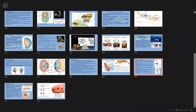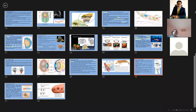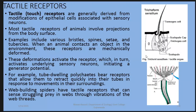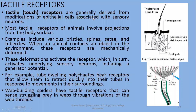The last type of receptor we are going to discuss is tactile receptors. Tactile receptors are touch receptors, and are generally derived from modifications of epithelial cells associated with sensory neurons. Most tactile receptors involve projections from the body surface. Examples include certain types of bristles, spines, setae, and tubercles — all projections from the animal body. In this diagram you can observe these sensory projections, which receive touch and respond to deformations or changes in their position.